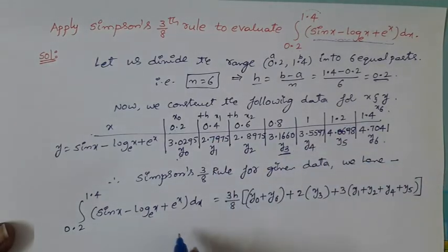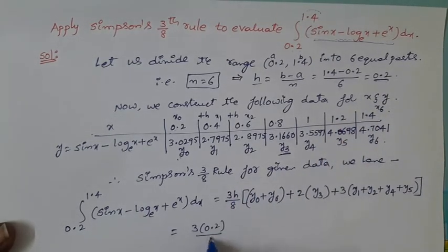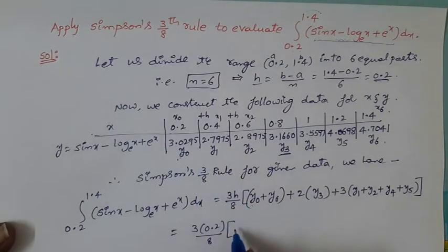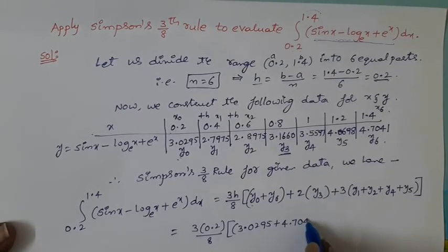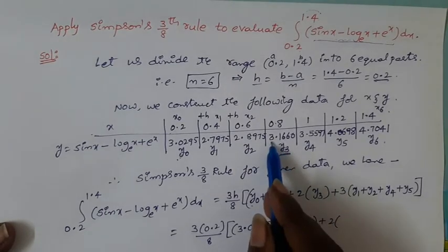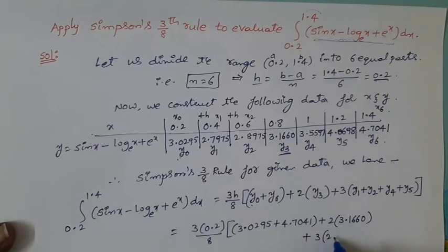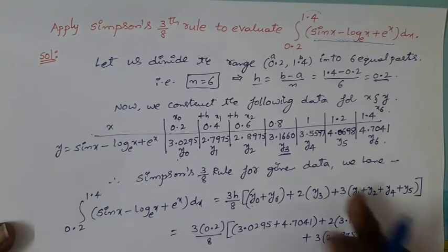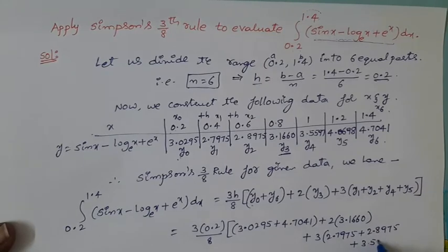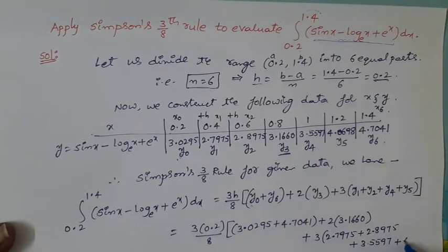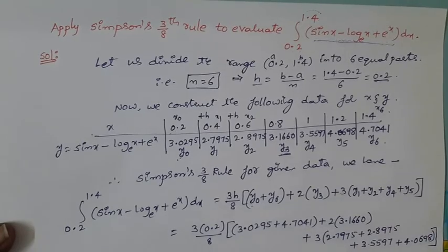Now replace these values using the above data. 3 times h, h is 0.2, over 8, bracket open. First and last ordinates are 3.0295 plus 4.7041, close bracket, plus 2 times y3 which is 3.1660, plus 3 times (y1 which is 2.7975, plus y2 which is 2.8975, plus y4 which is 3.5597, plus y5 which is 4.0698), close the bracket.